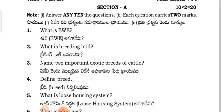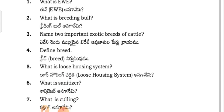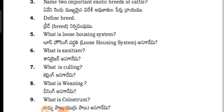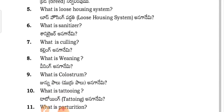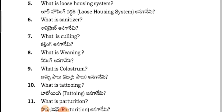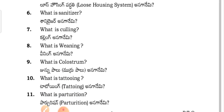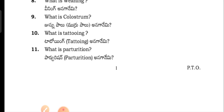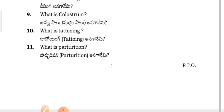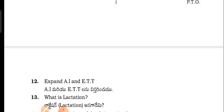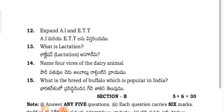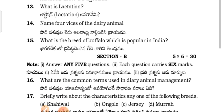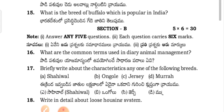Section A short answer questions include: What is eve? What is breeding bull? Name two important exotic breeds of cattle. What is loose housing system? What is sanitizer? What is curling? What is weaning? What is colostrum? What is tortoing? What is parturition? Expand AI and ETI. What is lactation? Name four vices of the dairy animal. What is the breed of buffalo which is popular in India?